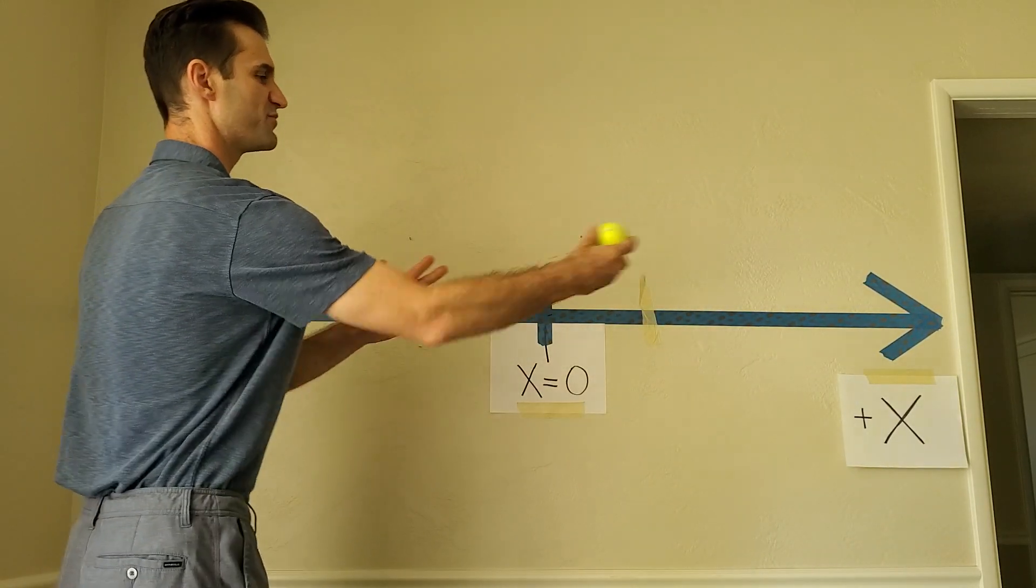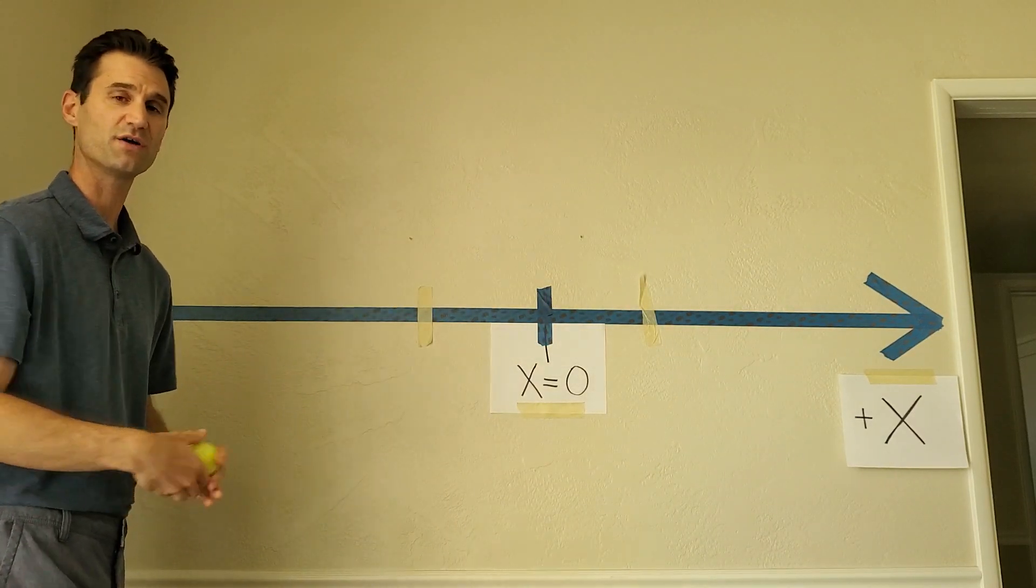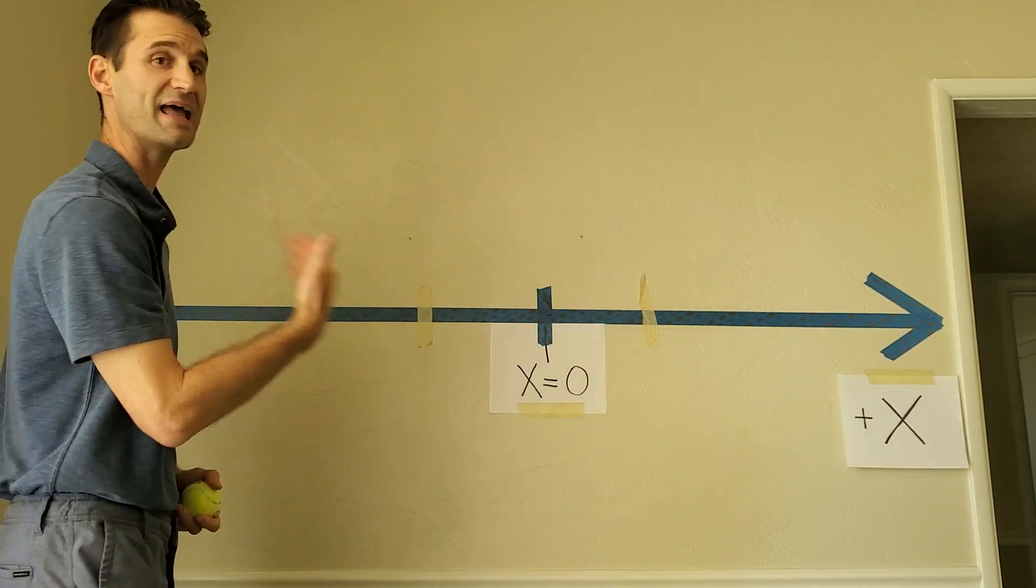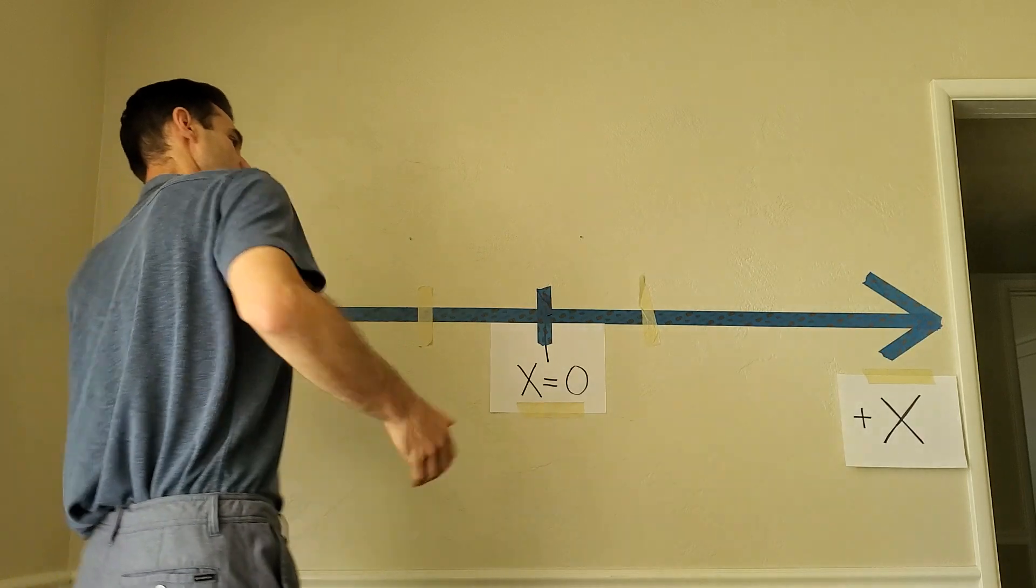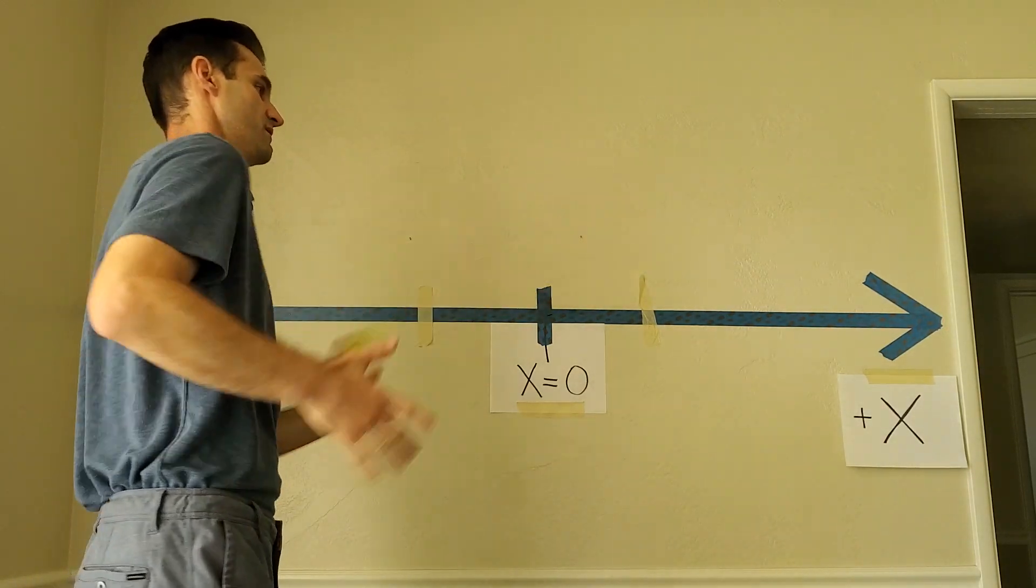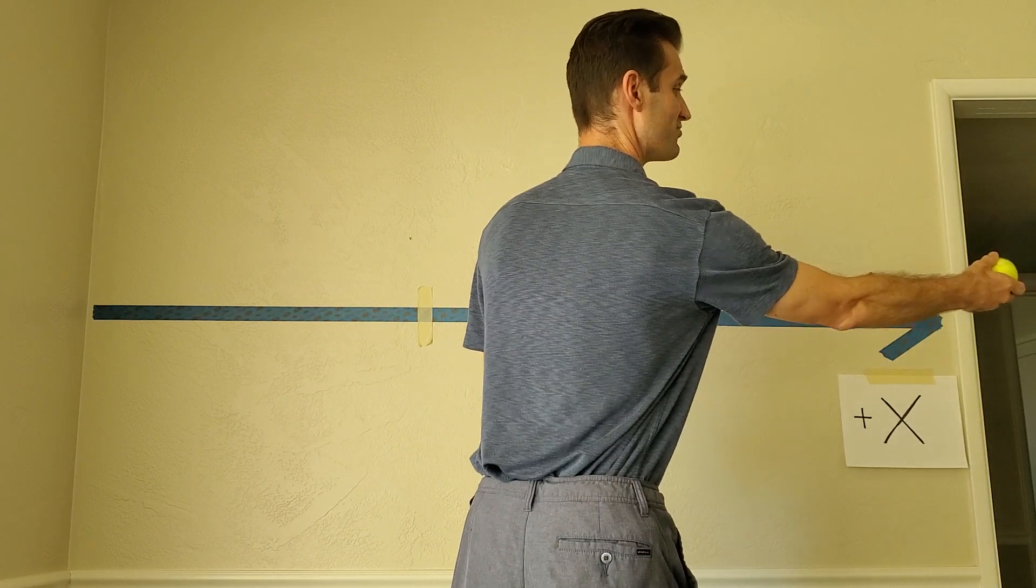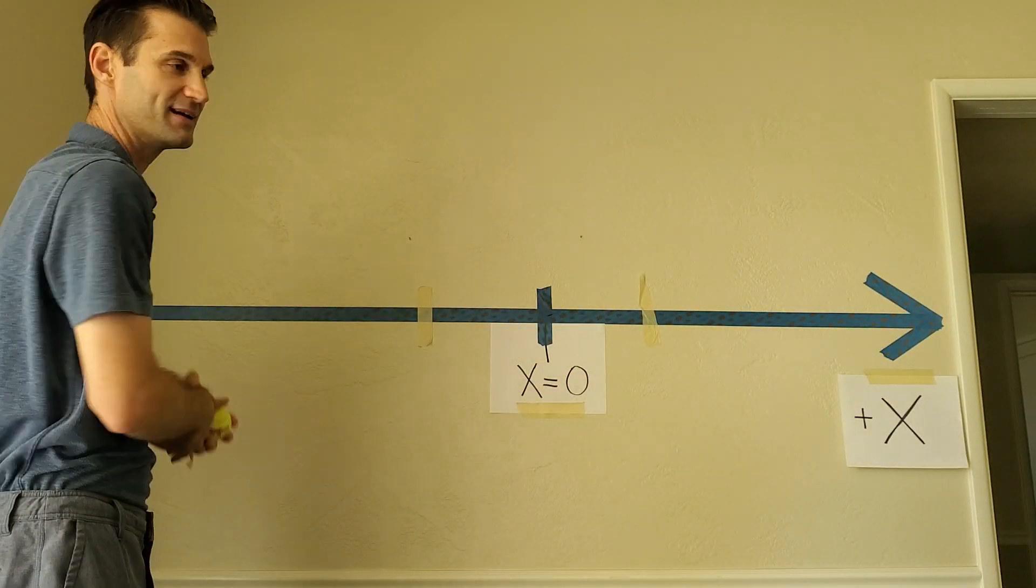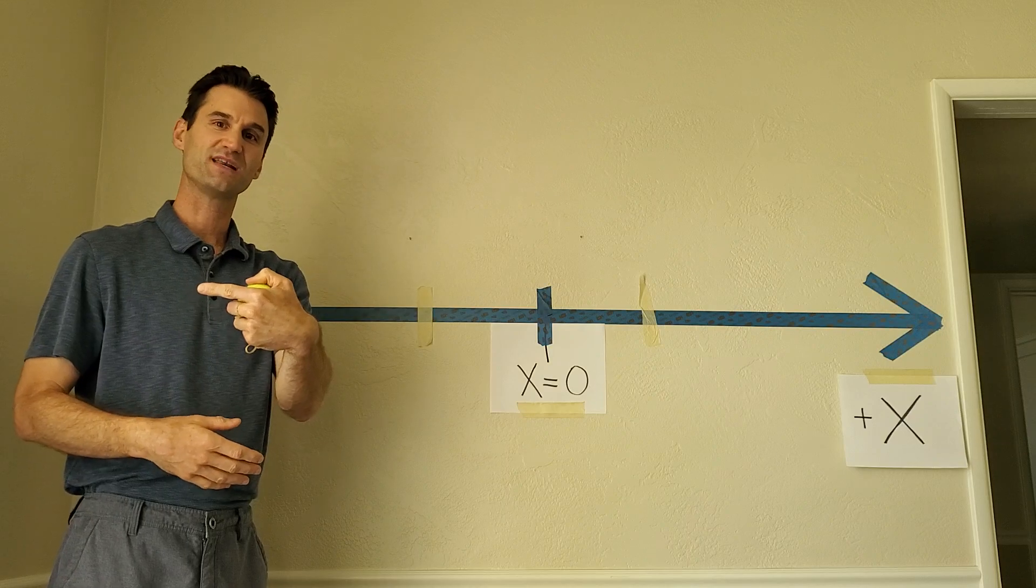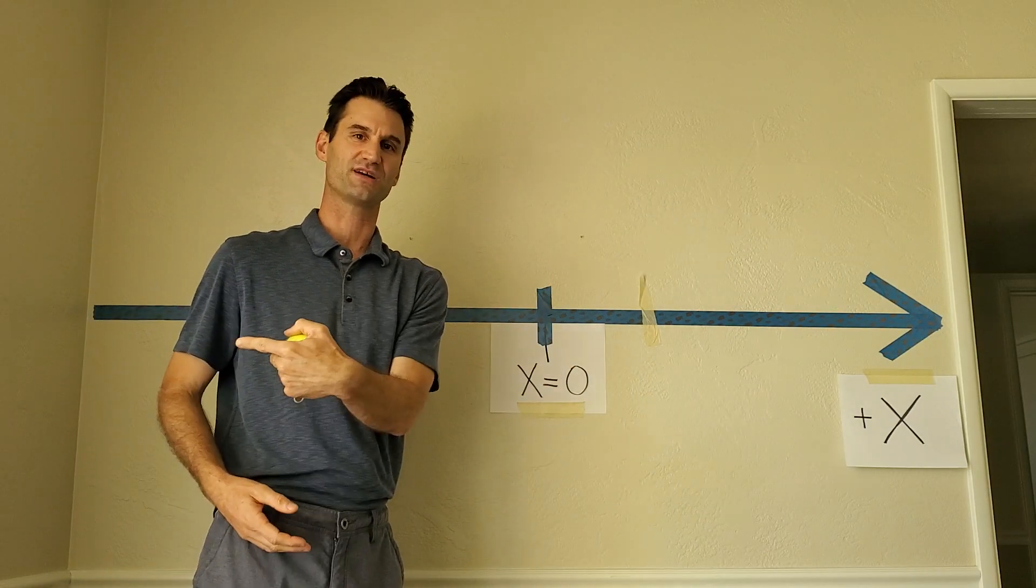Now watch the ball as it comes back. Does it speed up or slow down? We know the velocity on the way back is negative towards me. Well, it stops way out here and it starts to speed up faster, faster, faster, right? Since the velocity is that way and it's speeding up, the acceleration is also in that direction.